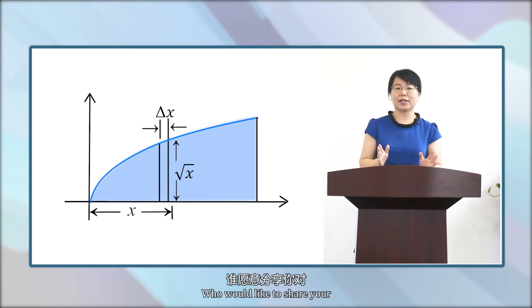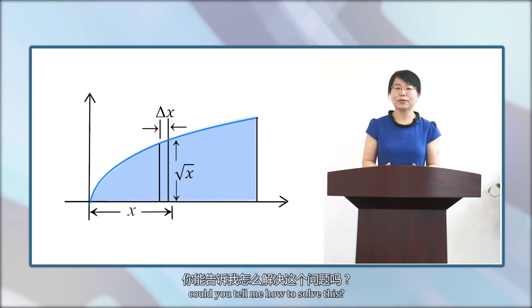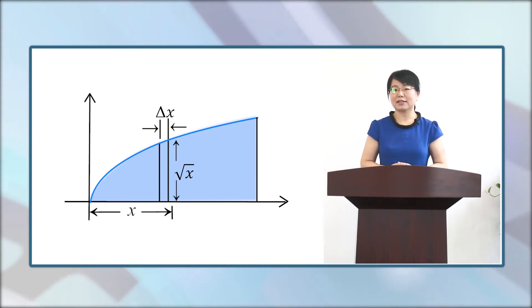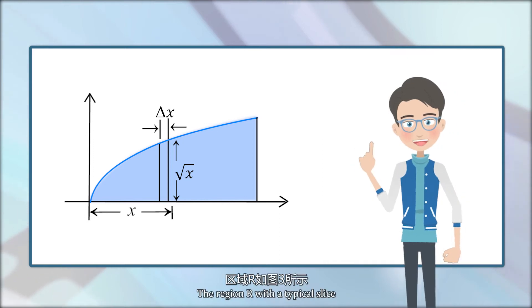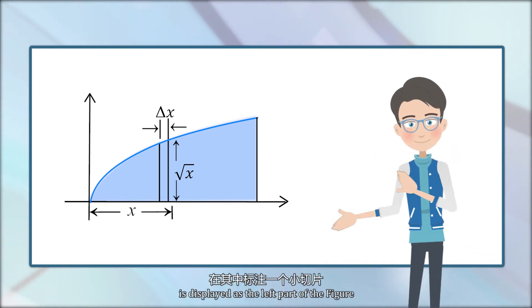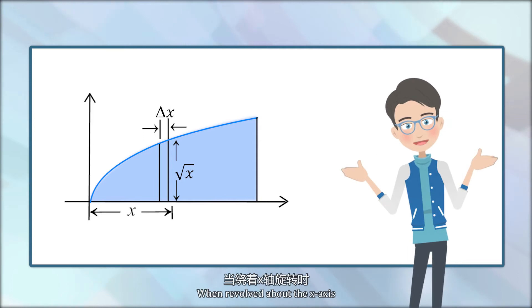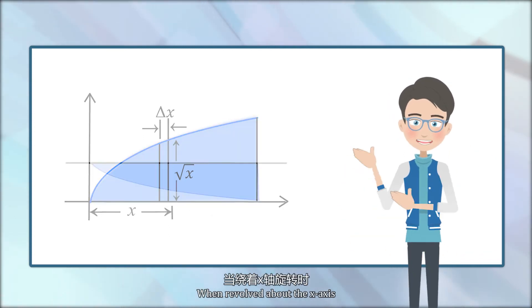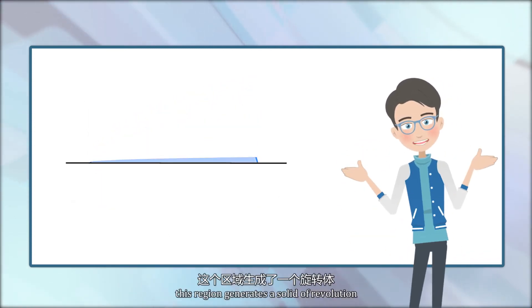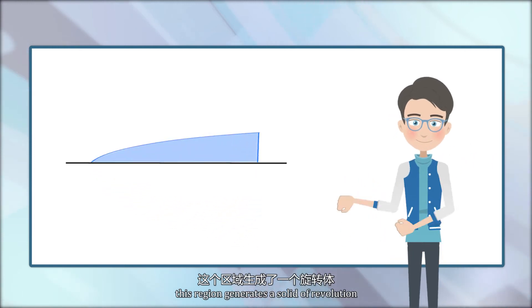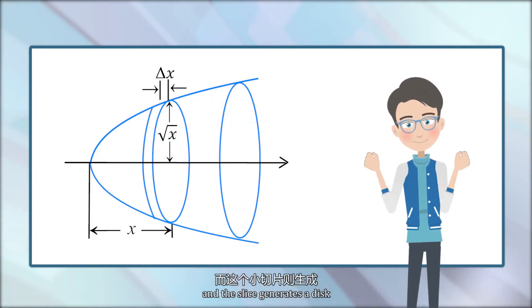Who would like to share your ideas about this problem? All right, Jovenson, can you tell me how to solve this? The region R with a typical slice is displayed at the left part of the figure. When we revolve about the x-axis, this region generates a solid of revolution and the slice generates a disk, a thin coin-shaped object.